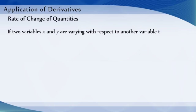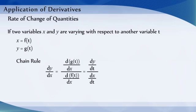Further, if two variables x and y are varying with respect to another variable t, that is, x = f(t) and y = g(t), then by chain rule, dy/dx = (dy/dt)/(dx/dt), provided dx/dt ≠ 0.